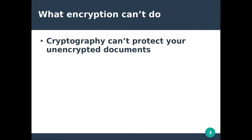If somebody got access to your computer, could they do file carving on your hard drive to recover a file that was deleted but was unencrypted at some point on the disk? Think about where the data is before it's encrypted, and also after it's encrypted — whenever you're working with the data, where is that data located, and what kind of traces would remain on the system when it's not being used anymore?